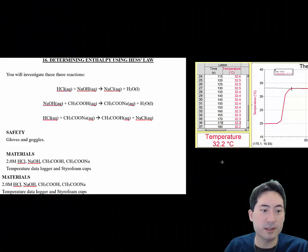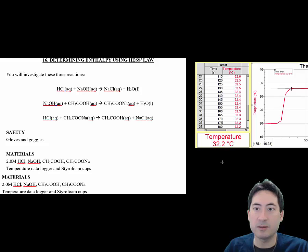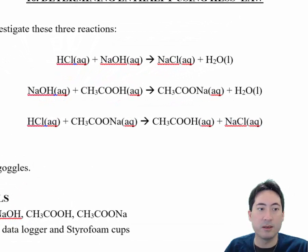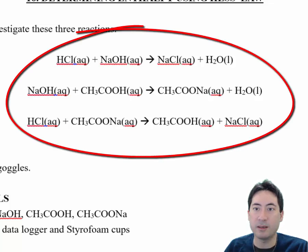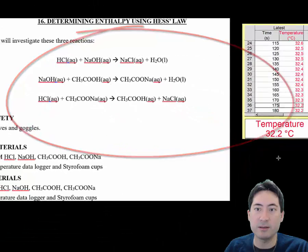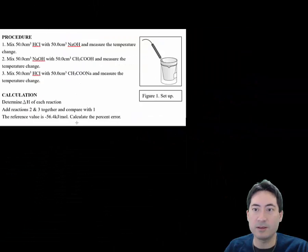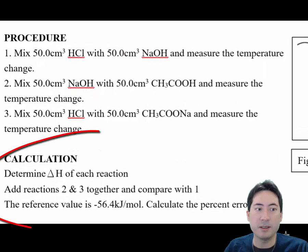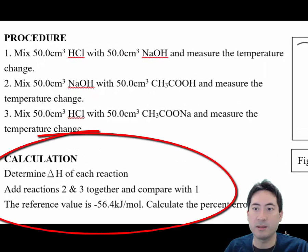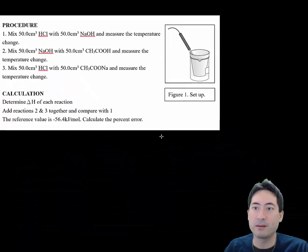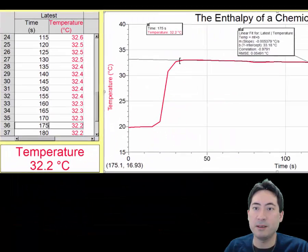Okay, welcome to this next experiment. In this experiment, you are asked to add two molar of these various solutions to make these three reactions. You added 50 mils of each, and then you're asked to determine the enthalpy and see whether that proves Hess's law and how far you are out.